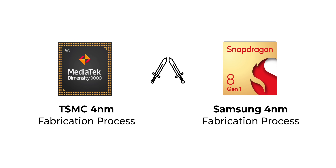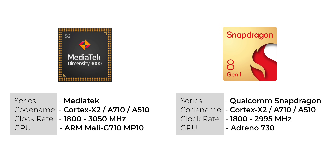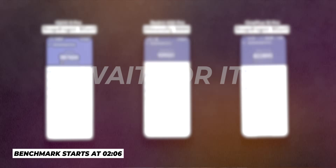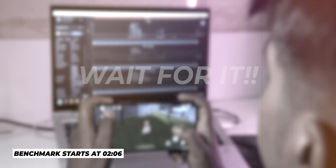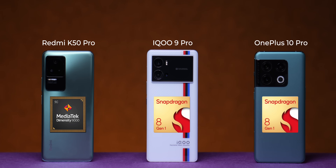I tested the Dimensity 9000 against the Snapdragon 8 Gen 1, which is based on Samsung's inflated 4nm fabrication process — everybody knows that TSMC is kind of better. The specs are quite similar on both these chips, but MediaTek's Dimensity SoC actually has a slightly overclocked CPU and a Mali GPU instead of an Adreno one. I did a detailed performance comparison with benchmarks and a detailed Genshin Impact gaming test with FPS data on the Dimensity 9000 running inside the Redmi K50 Pro.